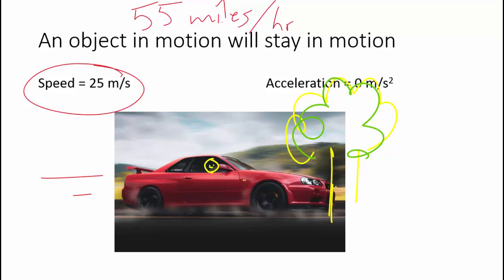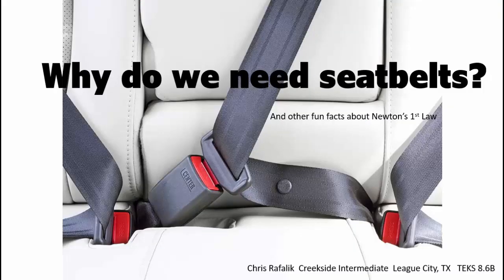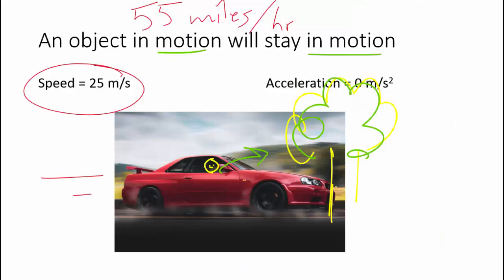But an object in motion is going to want to stay in motion. So this person would start to fly out the window. And that's obviously going to result in a lot of injury. So that would be why you wear a seatbelt. Because that seatbelt is going to keep them attached to the car. When the car slows, they slow, rather than an object in motion staying in motion.